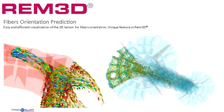As said at the beginning of this newsletter, the remeshing drives all the results you will get from your simulation. One application is the Fiber Orientation Prediction. REM3D has a unique feature to clearly and quickly assess the fibers orientation in your final part. We will dedicate our next newsletter to this topic, so stay tuned.